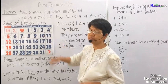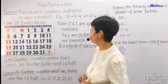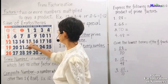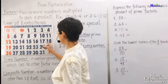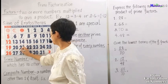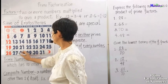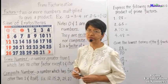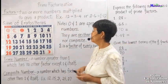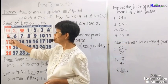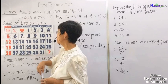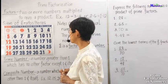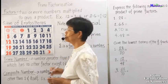Next we cross out all the numbers divisible by 3, so we have 9, 15, 21, 27 — and 30 is already crossed out. Then we cross out all the numbers divisible by 5; most of them are already crossed out except 25.